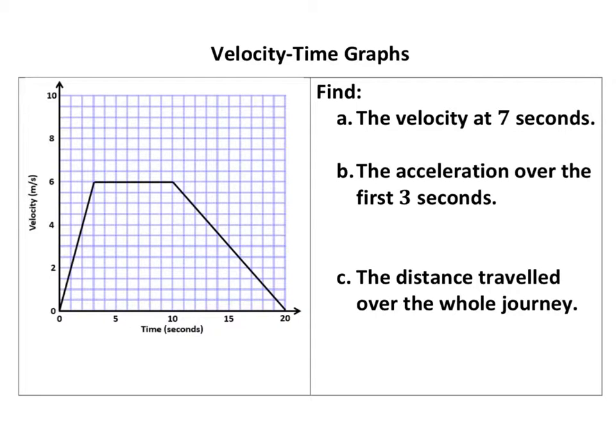as you would expect, similar to distance-time graphs. Now the velocity at seven seconds, so I'm going to go up here and read off, there we go, is going to be 6 metres per second. So for every second that elapses you've gone 6 metres. It's quite quick actually.